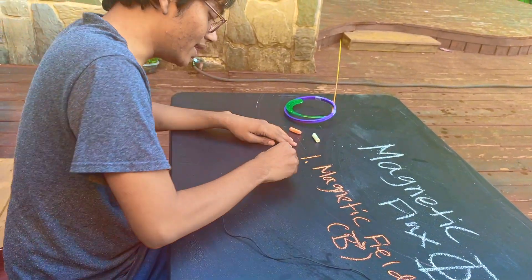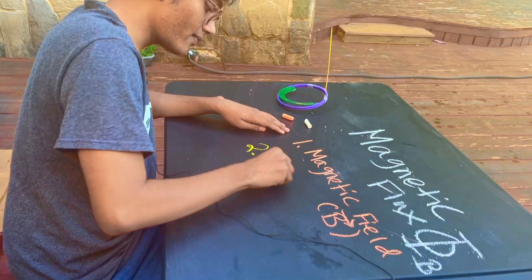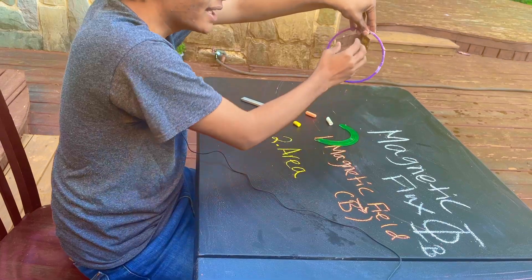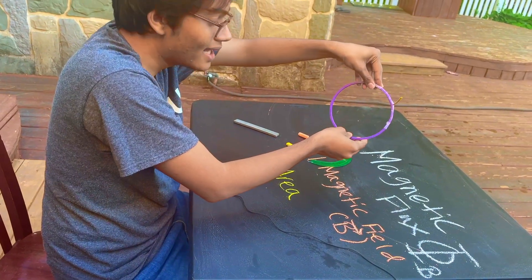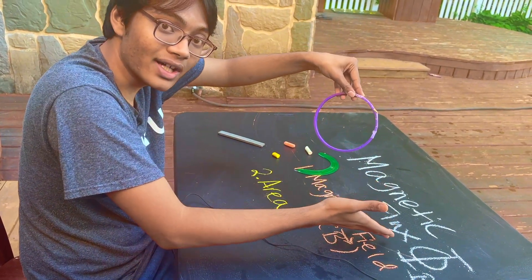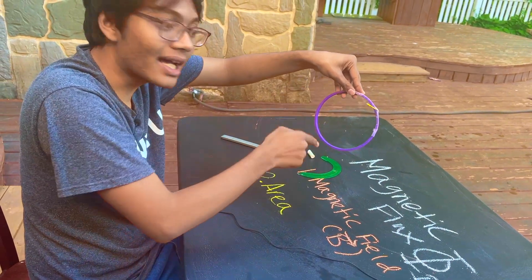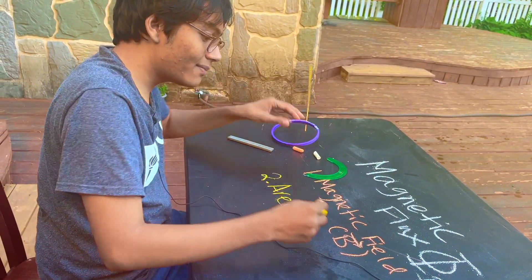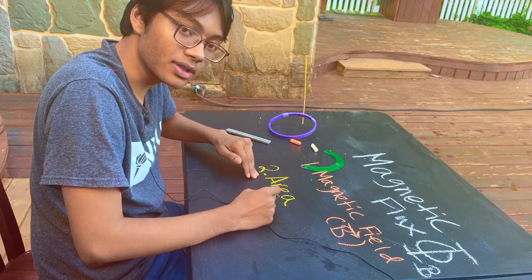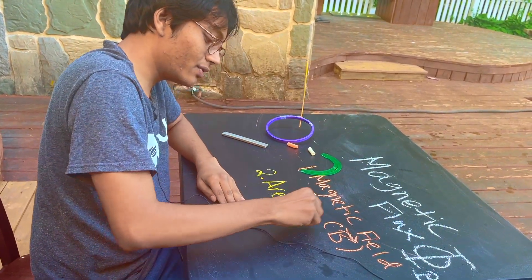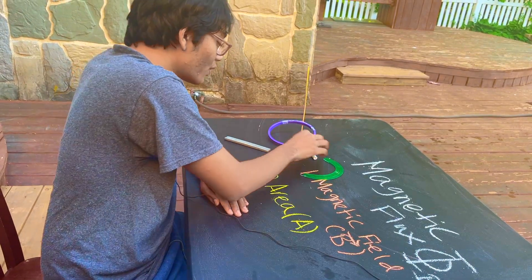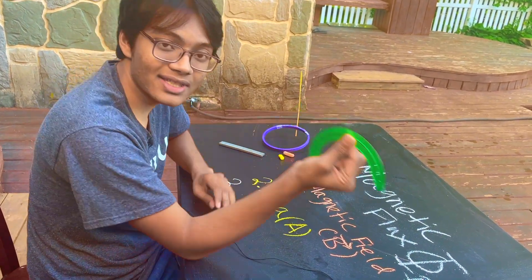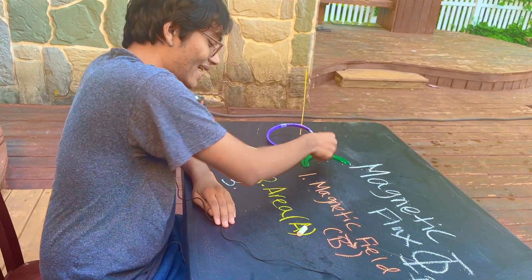The second factor that influences magnetic flux is the area. If you have a larger surface — if I were to enlarge this purple circle — then I would have a greater magnetic flux, because more magnetic field lines would pass through a bigger circle. So magnetic flux is proportional to area, designated with the letter A. The third and last factor is the angle.